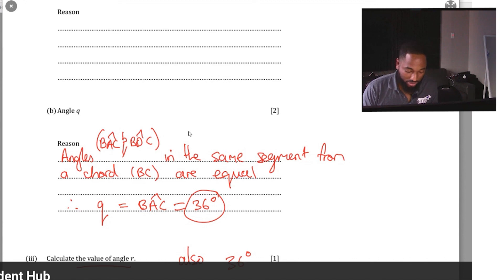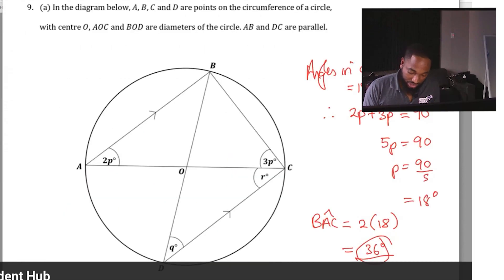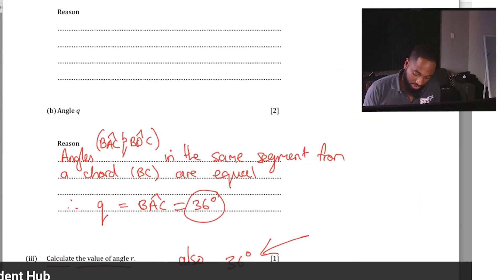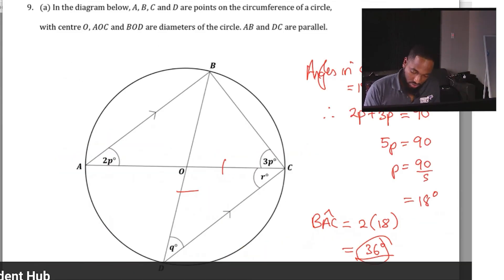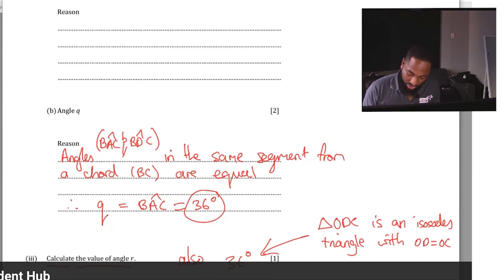Yeah, it's hard to not answer when your mother calls, even if you're live right now. They said to calculate the value of angle r. Therefore, I would show one of the definitions that I gave: that ODC is an isosceles triangle with OD equal to OC, the radius of the circle. And furthermore, these angles in an isosceles triangle are equal.